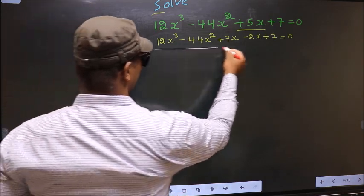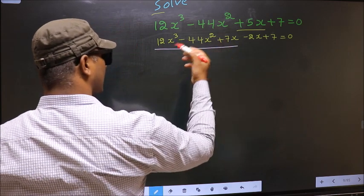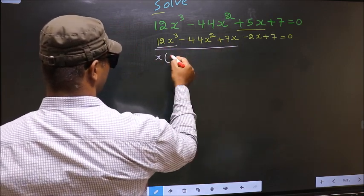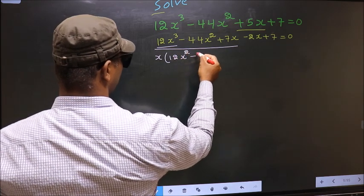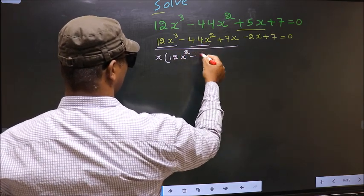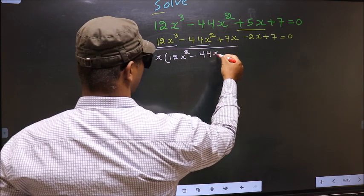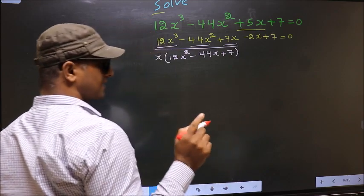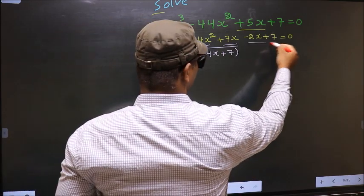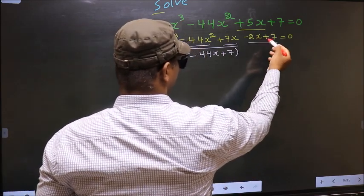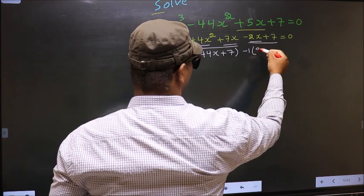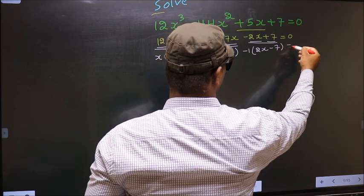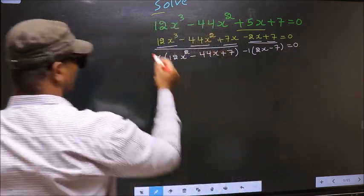Now from the first three terms, what can be taken out common is x. So you get x times (12x² minus 44x plus 7). From the remaining two terms, what can be taken out common is minus 1, giving minus 1 times (2x minus 7) equal to 0.